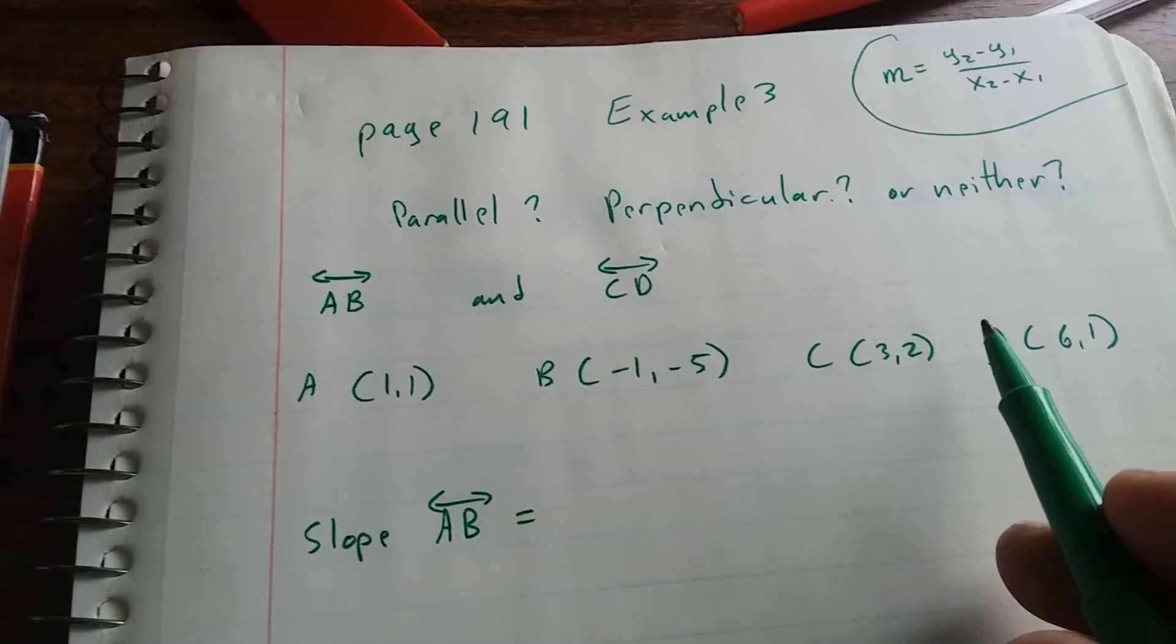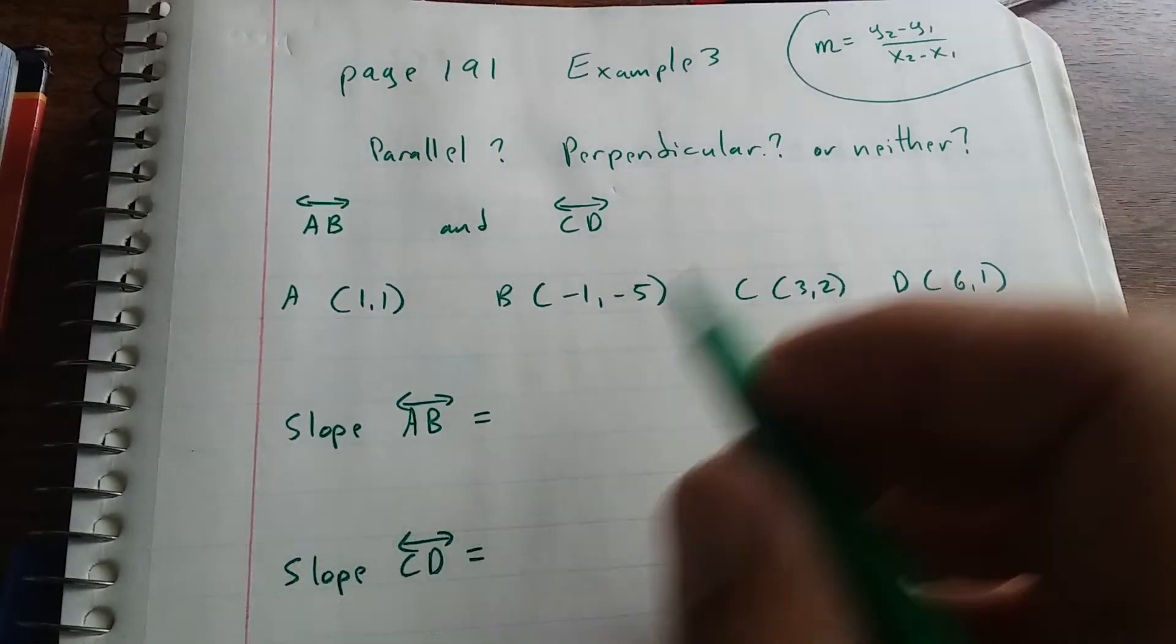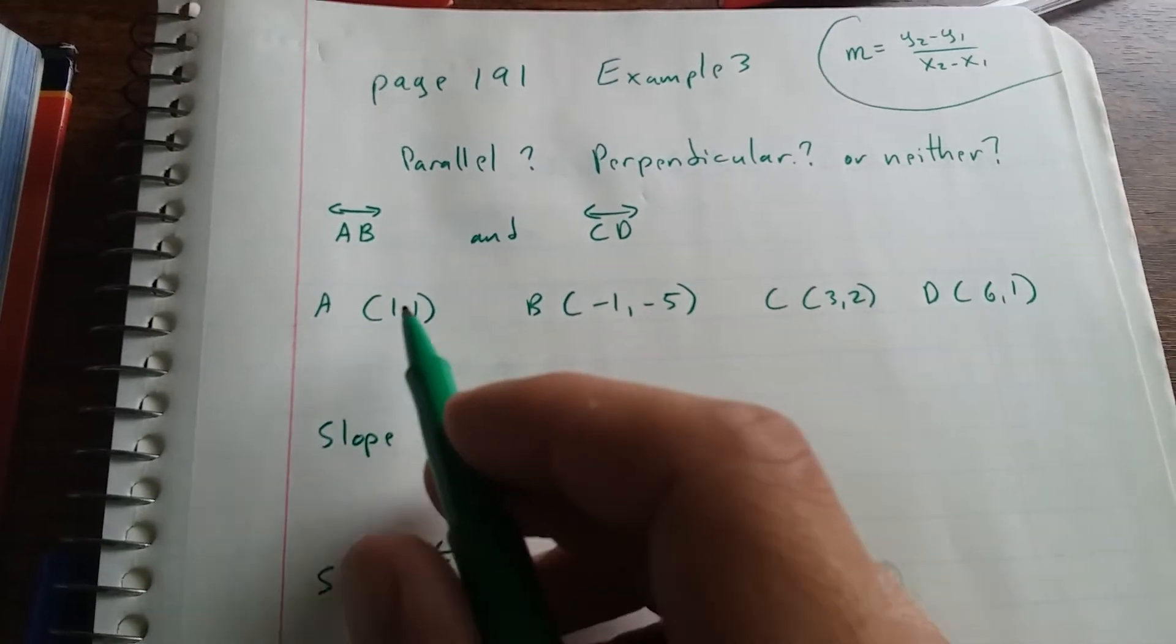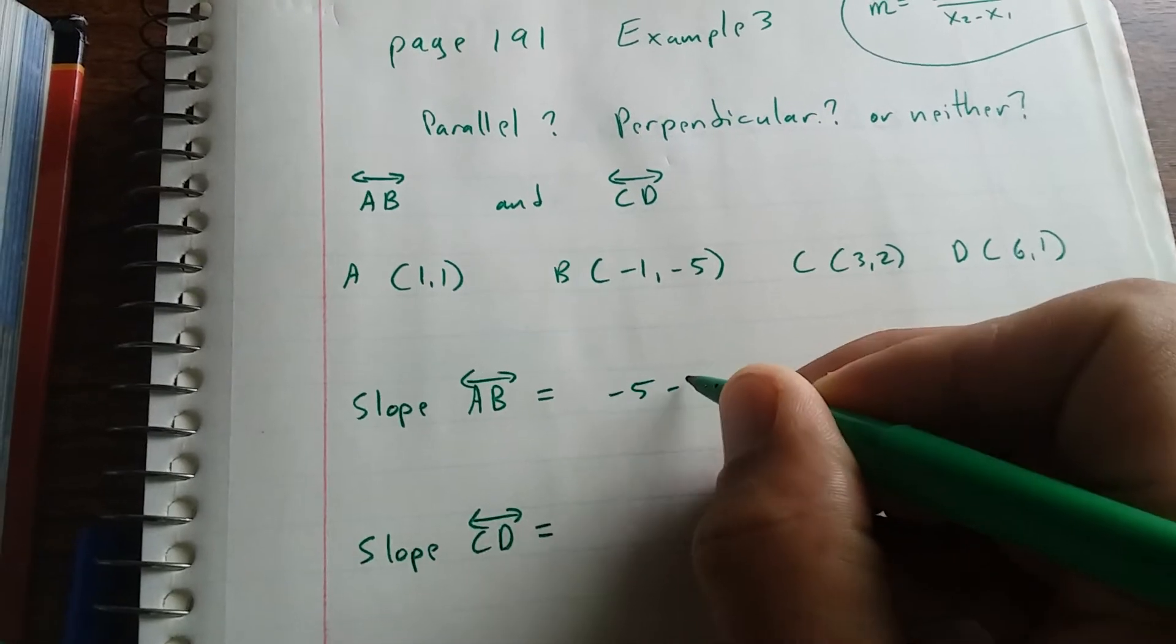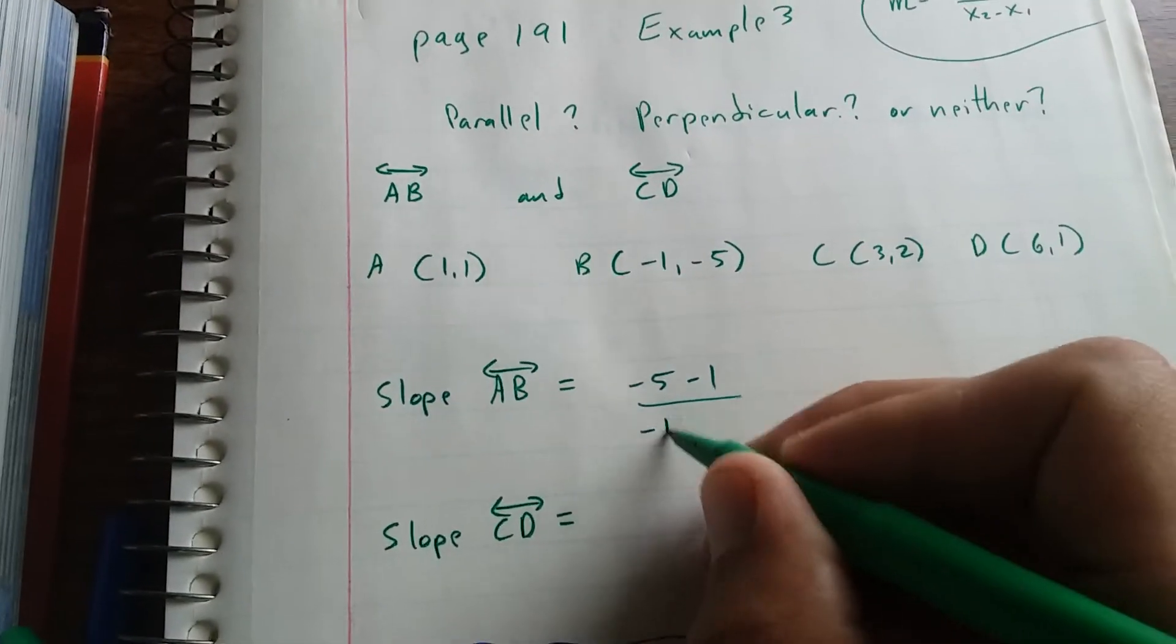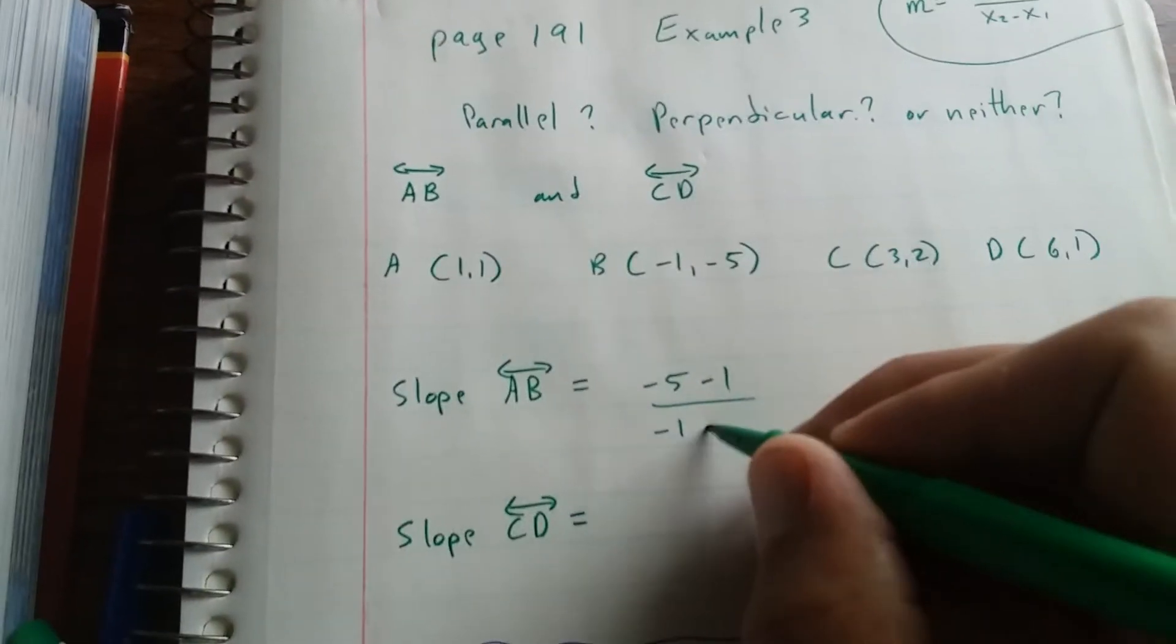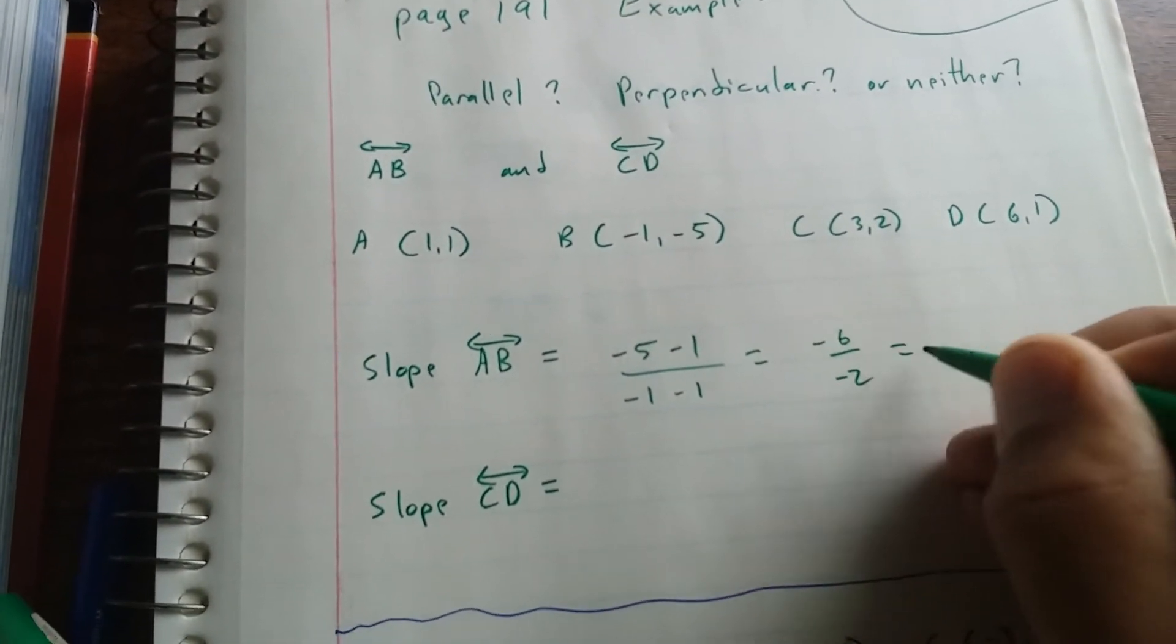So here are the points from the book. And we're going to use this formula to find the slope of AB. So the slope of AB, you do, so we've got to find A and B. So we're going to do negative 5 minus 1. That's Y2 minus Y1 over X2, negative 1, minus X1, minus 1.